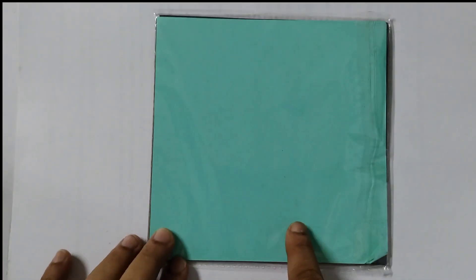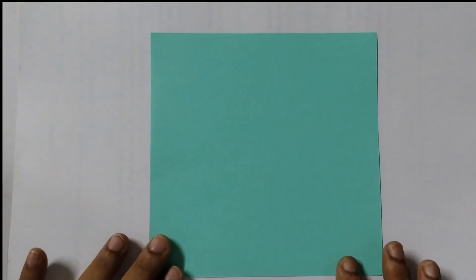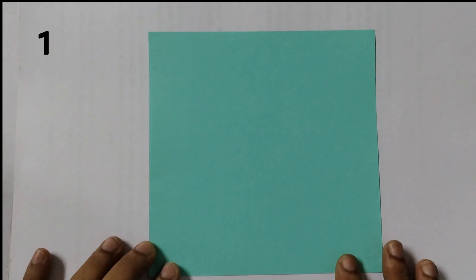For this you need square shaped paper. So I have taken this origami paper and I will take a light color. Choose a light color because you need to draw the lines. So I will choose this green color. You can choose any light color so that the lines are clearly visible to you. This is my sheet and this is a square sheet.